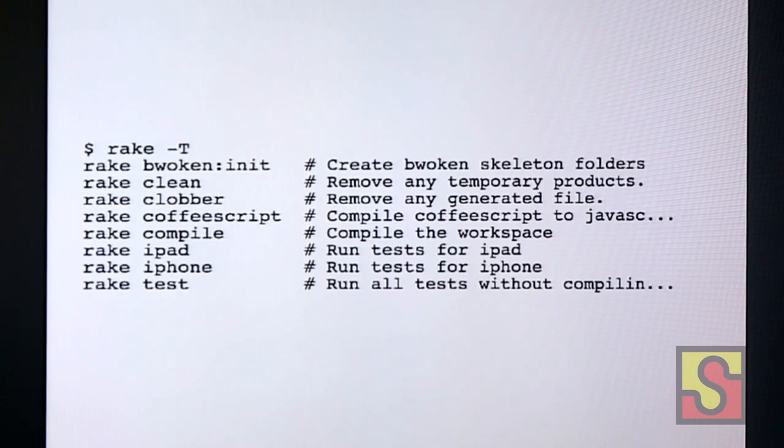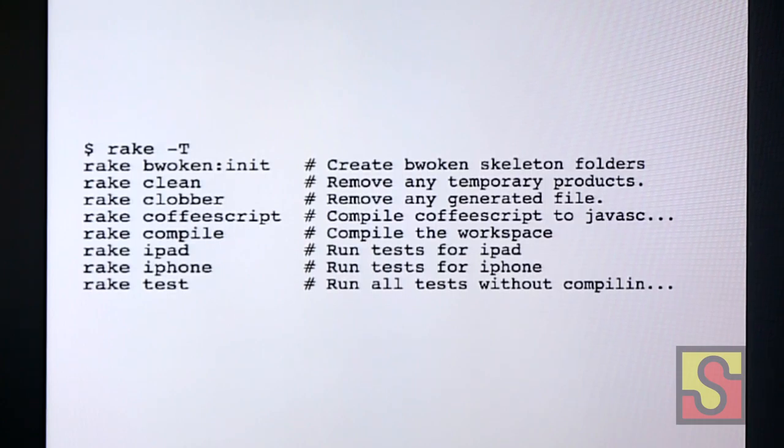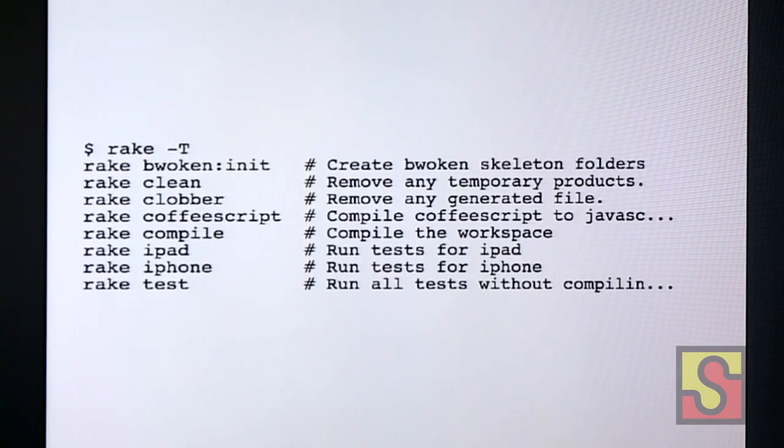So the last piece of the puzzle for Boken is something called Rake, which is Ruby's version of Make. And using Rake is pretty easy. You just call Rake-T to see all the tasks that are available for you to do. And this works with any time you use Rake. And here we can finalize the Boken with only a few more slides left in my presentation.